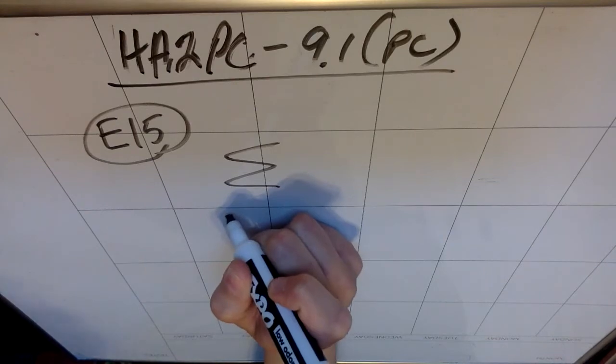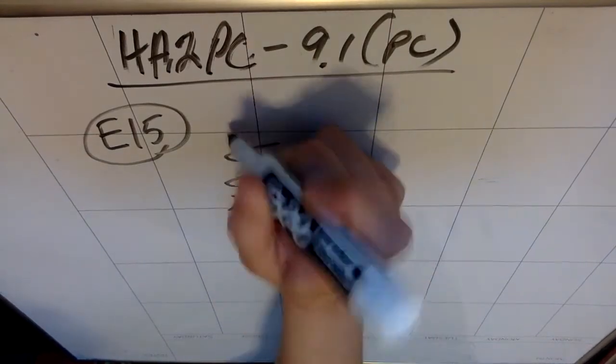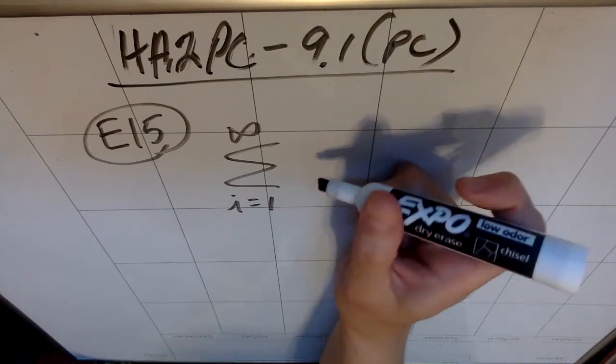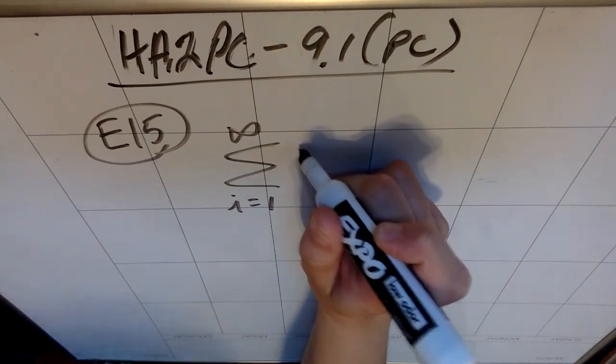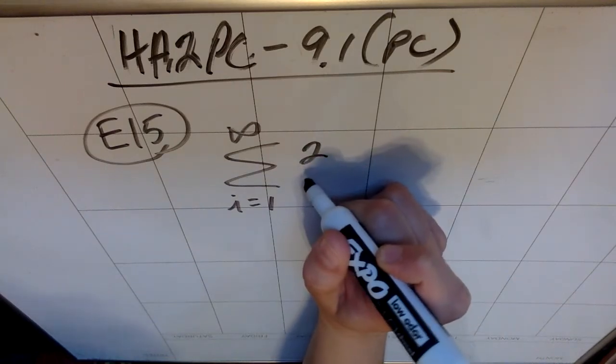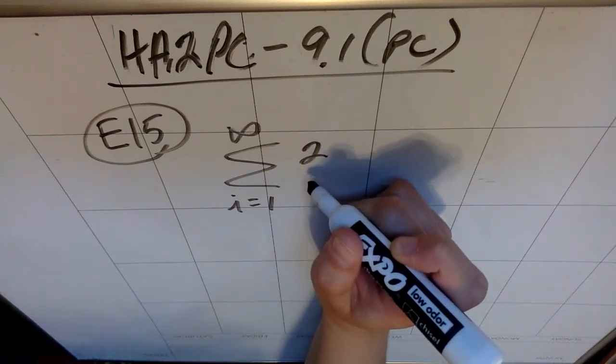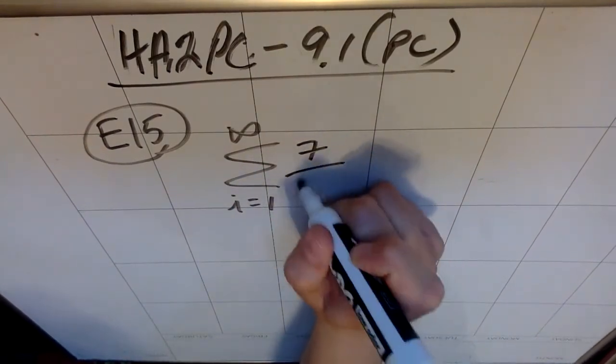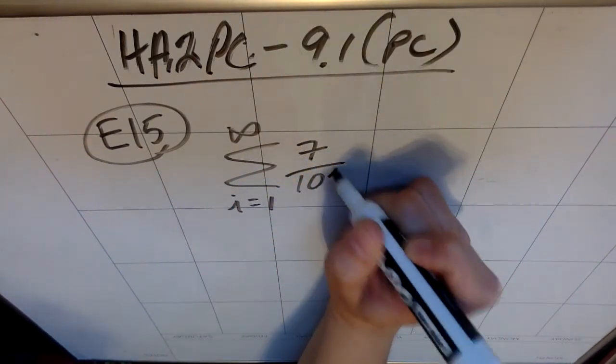We're going to look at the infinite series from i is 1 to infinity of, let's do a 7 over 10 to the i.